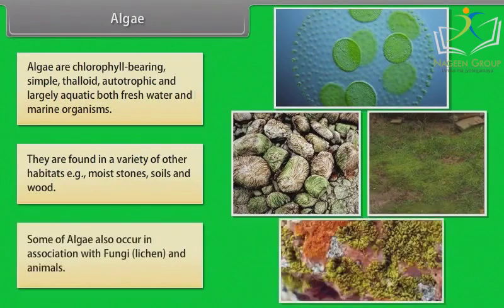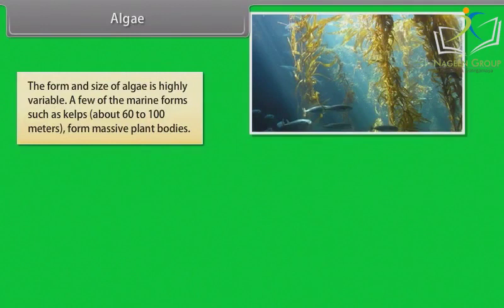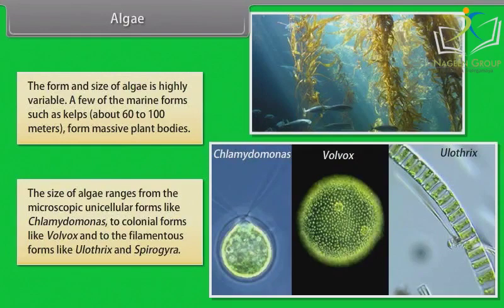Some algae also occur in association with fungi, lichen, and animals. The form and size of algae is highly variable. A few marine forms such as kelps can be about 60 to 100 meters, forming massive plant bodies. The size of algae ranges from microscopic unicellular forms like Chlamydomonas, to colonial forms like Volvox, and to filamentous forms like Ulothrix and Spirogyra.